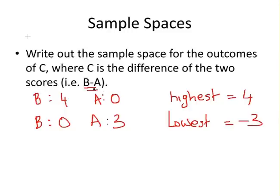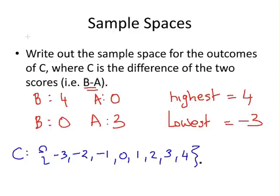Just to be clear, we're using B minus A. So the sample space for C is negative three, negative two, negative one, zero, one, two, three, and four.